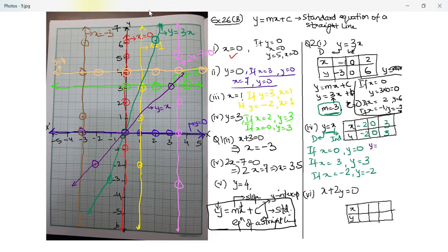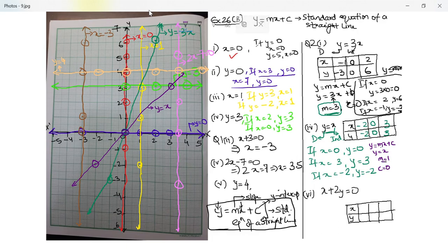Comparing y equal to x with y equal to mx plus c: m equals one and c equals zero. Looking at the slope of y equal to x versus y equal to 3x — which is more slanted? y equal to 3x has more slope. The closer you are to the x-axis, the less the slope; the closer to the y-axis, the greater the slope.